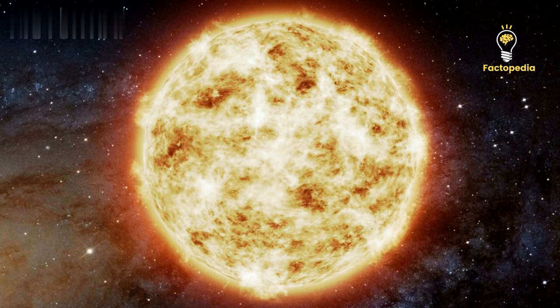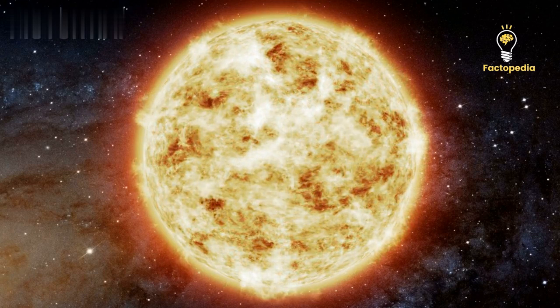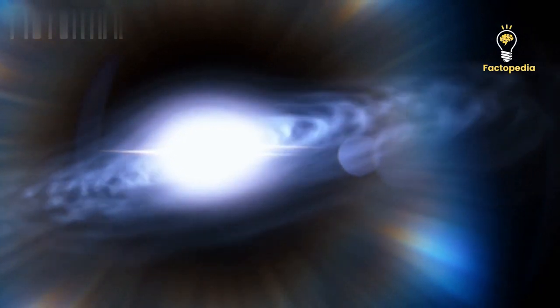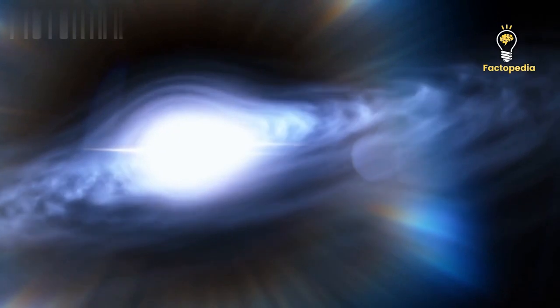This black hole is so massive that it's billions of times more massive than our sun. As matter falls into the black hole's gravitational pull, it forms an accretion disk, a swirling disk of superheated gas and dust.